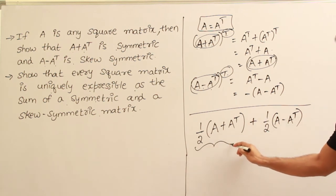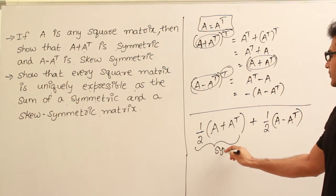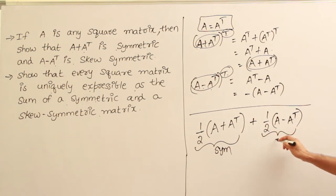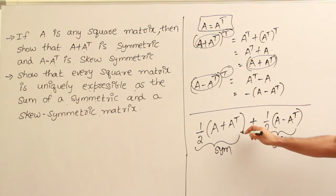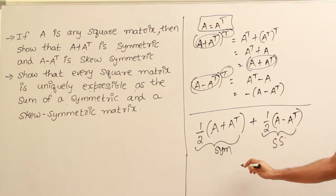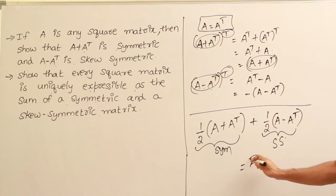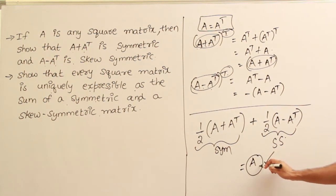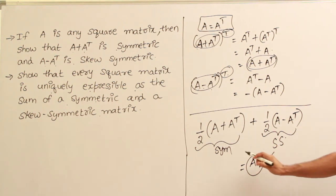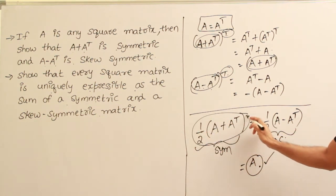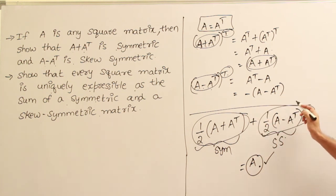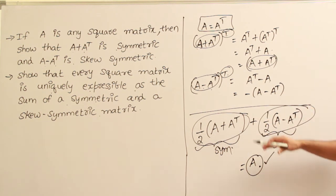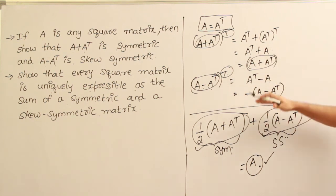So, half of A plus A transpose is a symmetric matrix, and half of A minus A transpose is a skew symmetric matrix. Adding both of them gives A. Therefore, every square matrix A can be expressed as the sum of two matrices — one symmetric and one skew symmetric. We have used the proof from the first example to prove the second.